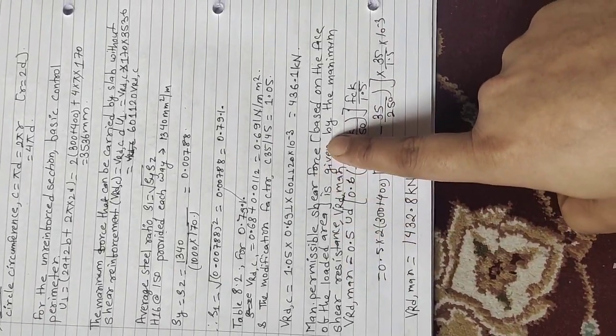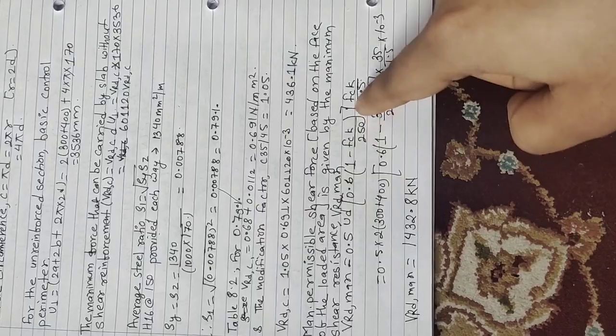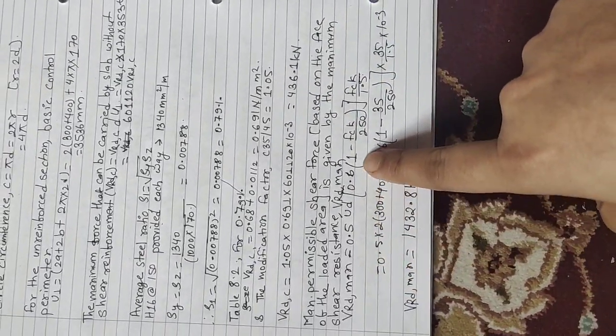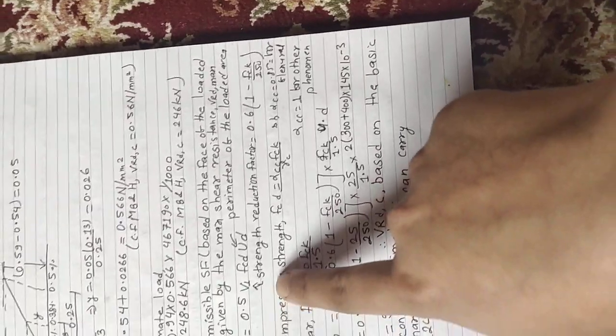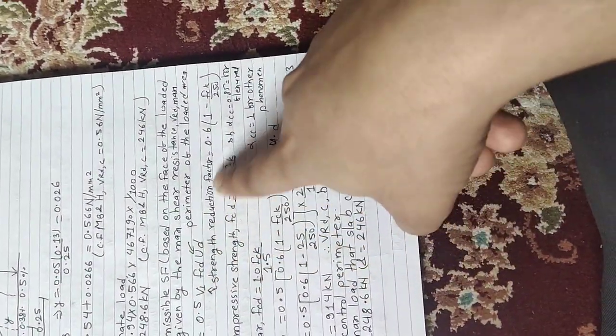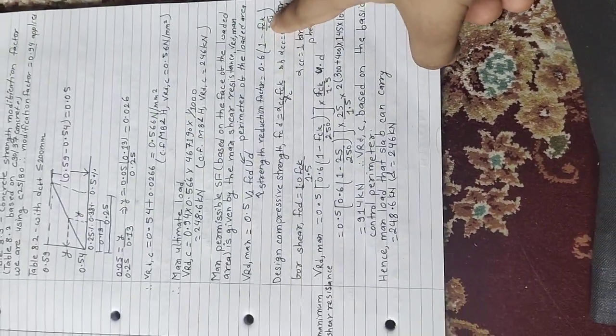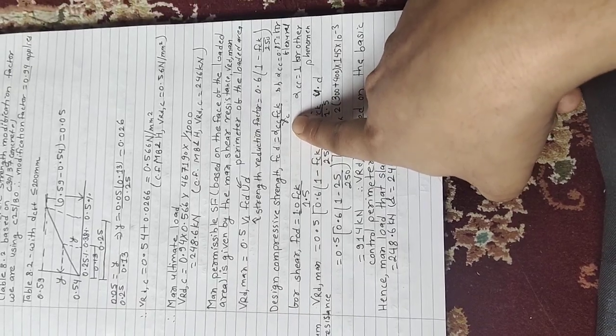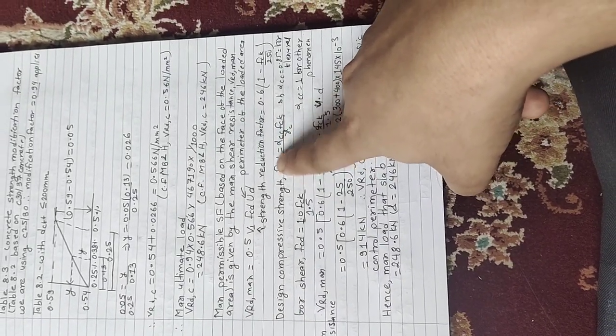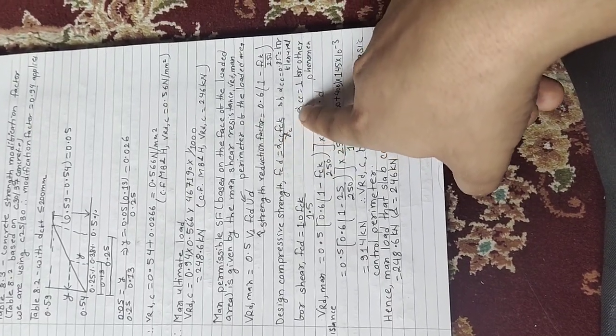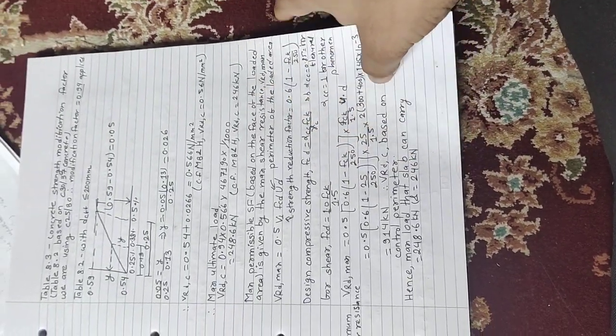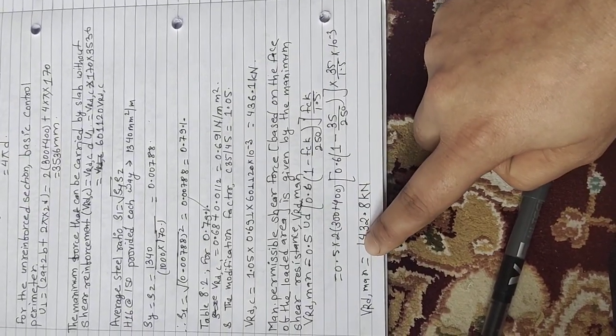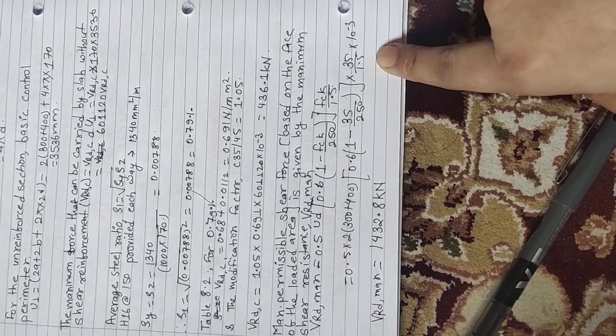Maximum permissible ultimate force that can be carried by the loaded area, means by the column, is given by: V_Rdmax = 0.5·u·d·0.6(1 - fck/250)·fcd. The reduction factor is 0.6(1 - fck/250), and design compressive strength is fcd = αcc·fck/γc. We use αcc = 1 from Eurocode 2 and γc = 1.5 for partial factor of safety.